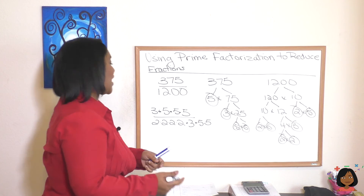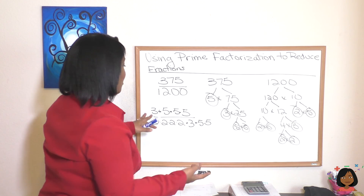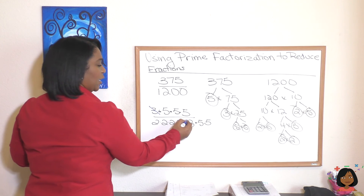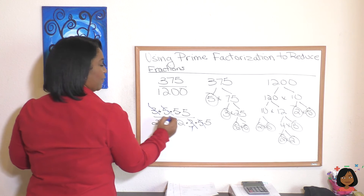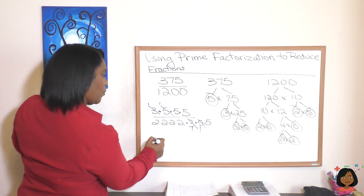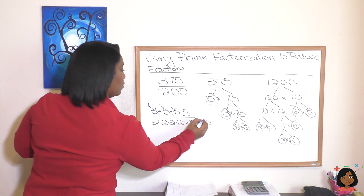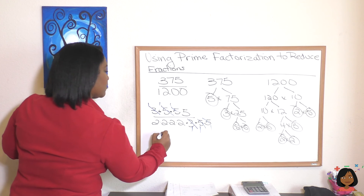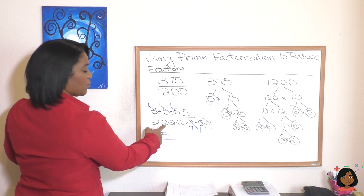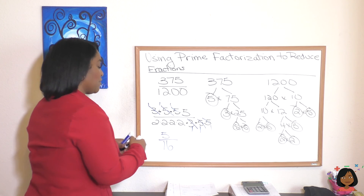Now we reduce anything equivalent to 1 — let's look for like factors. There are no 2s on the top, but we've got a 3 here and a 3 here, and a 5 here and a 5 here. So now we multiply what's left. I still have one more 5 to go. So I've got one 5 left on top, and on the bottom 2 times 2 is 4, 4 times 2 is 8, 8 times 2 is 16. 5 sixteenths is your answer.